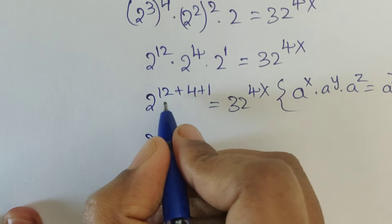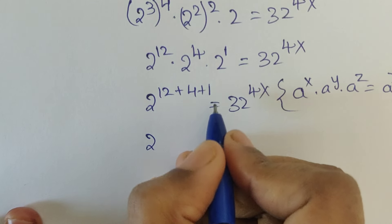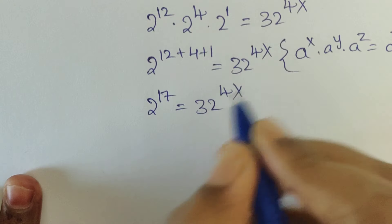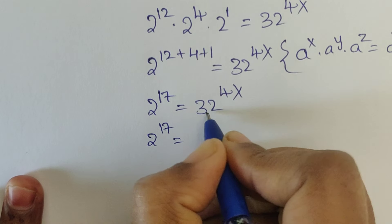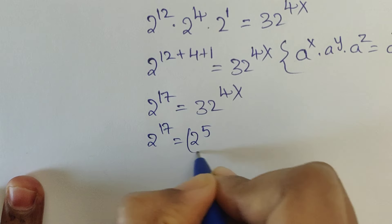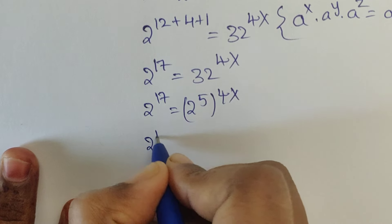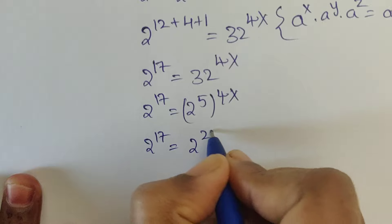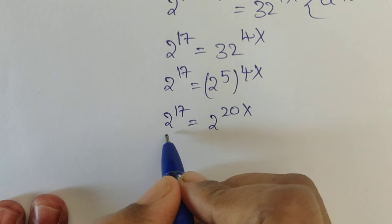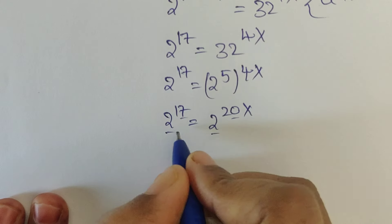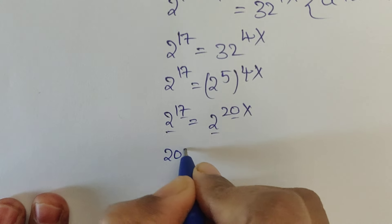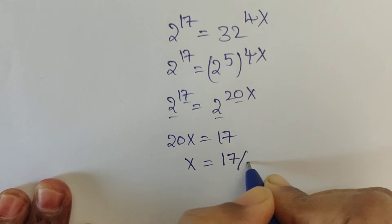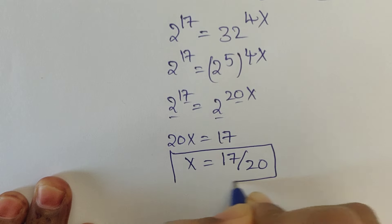Using this formula, we write 2 power 12 plus 4 plus 1 equals 32 to the power of 4x. So 2 power 17 equals 32 to the power of 4x. Since 32 equals 2 to the power of 5, we get 2 power 17 equals 2 power 20x. Here we have the same base, so we equate the exponents: 20x equals 17, therefore x equals 17 by 20. This is the value of x.